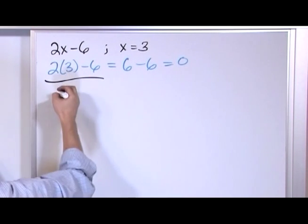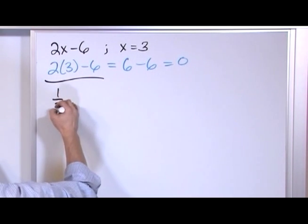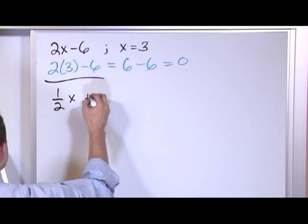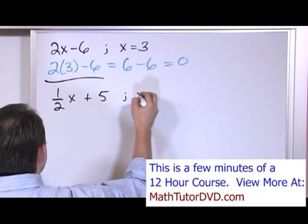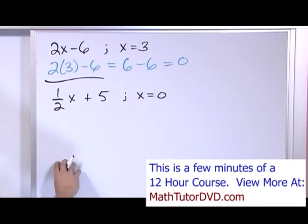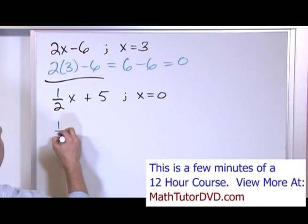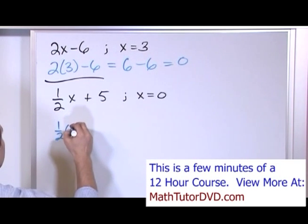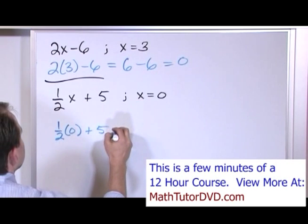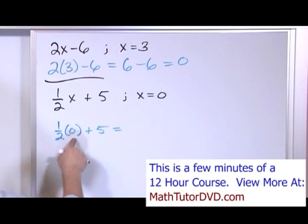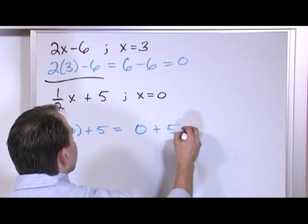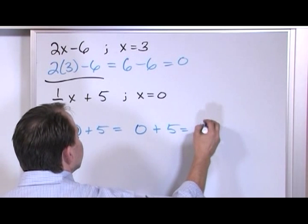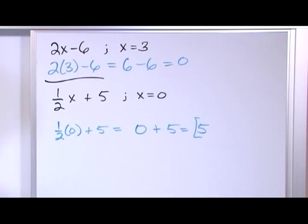What if you had 1 half times x plus 5, where x is equal to 0? So I plug in x equals 0: 1 half times 0 plus 5. Anything times 0 is 0, plus 5. It's just going to give me 5. That's going to be my answer.